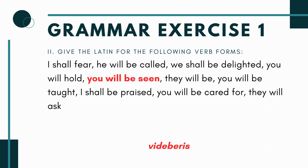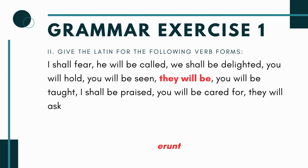Then you have 'you will be seen' — passive voice, it's going to be 'videberis.' The 'you' here I'm assuming is singular; Road to Latin will normally put a little 'pl' or something if it's plural. Remember when you go bo-bi-bi-bu in passive voice it's going to be 'be,' so instead of 'bi' it's 'be' — giving you 'videberis,' you will be seen. Next you have 'they will be' — it's just the verb to be; 'erunt' is the form.